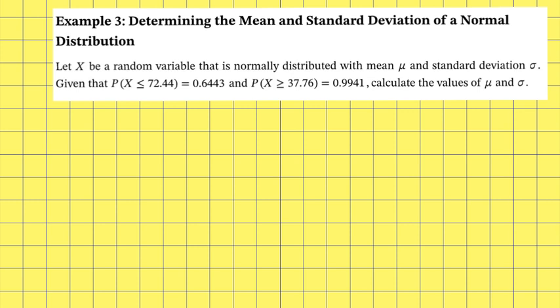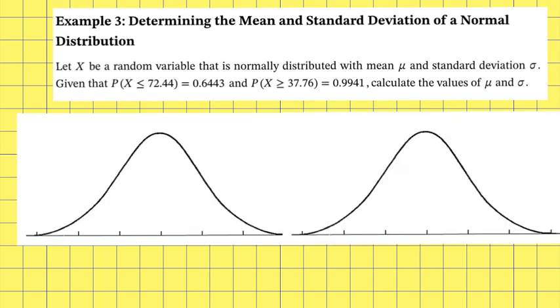In this case we're going to have to set up simultaneous equations because we've got two unknowns, so we need two equations to solve them. I'm going to draw the two standard normal distribution curves that we have to solve to find the two z-scores.